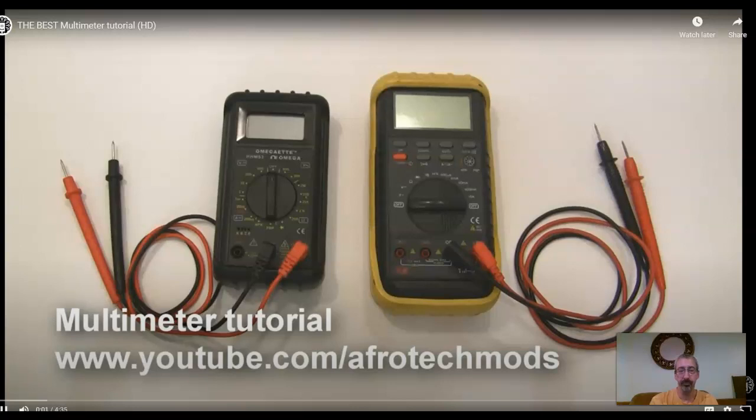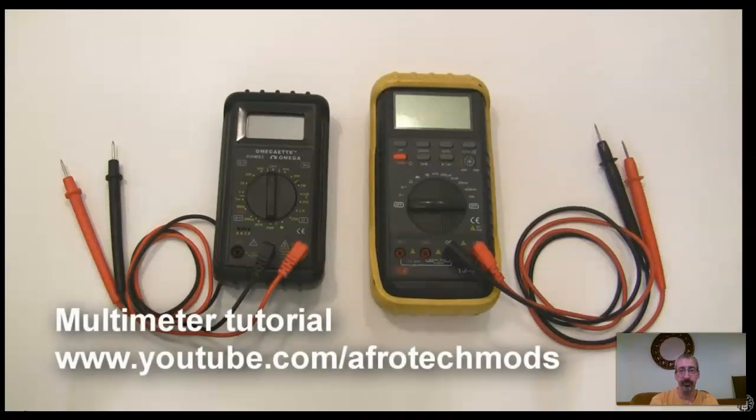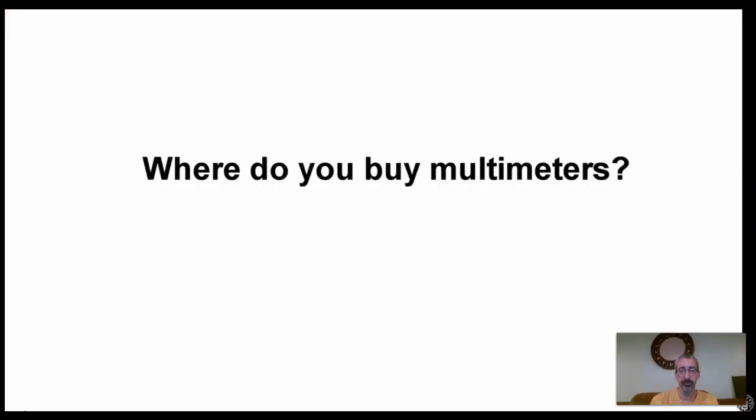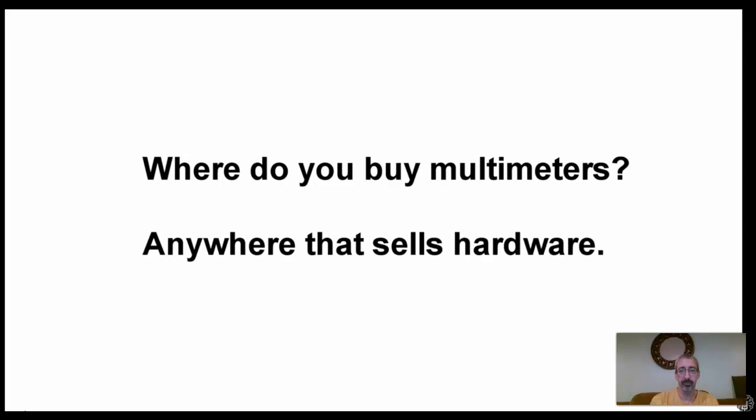In this video, I'm going to cover multimeters and how to use them to measure voltage, current, resistance, and continuity. First up, where do you buy a multimeter? Well, multimeters are everywhere. You can get them at Radio Shack, Sears, Dollar Stores, Walmart, Amazon, eBay, whatever's easiest for you.